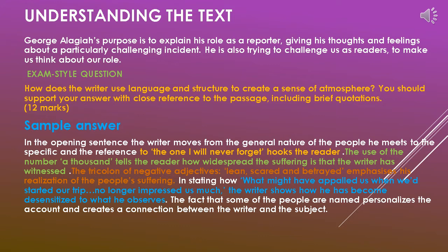There is also the use of number — 'a thousand' — which tells the reader how widespread the suffering is that the writer has witnessed. There is also the use of tricolon of negative adjectives, and I quote: 'clean, scared, and betrayed.' It emphasizes the realization of the people's suffering. In stating how 'what might have appealed to us when we had started our trip no longer impressed us much,' the writer shows how he has become desensitized to what he observes.